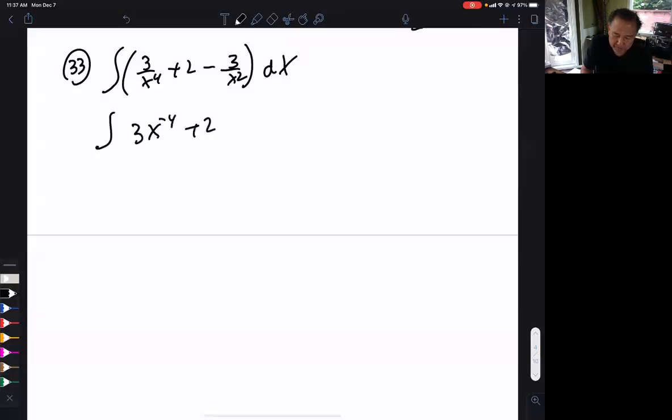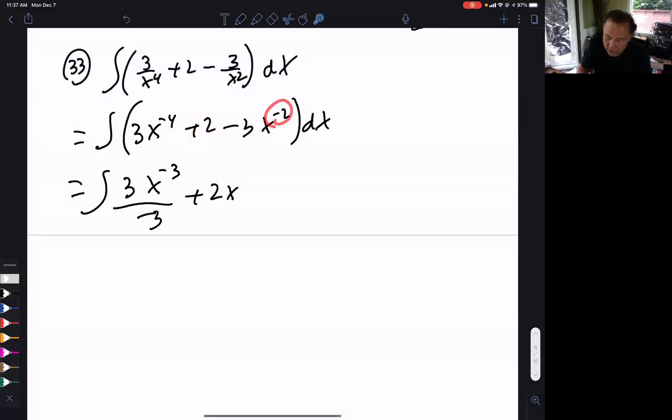We're going to apply our rule. Our rule says we add 1 to that power. So that's going to become a negative 3, but we divide by that negative 3. This is going to be 2x because the derivative of 2x is 2. Then we add 1 to that power. It's going to be negative 1.